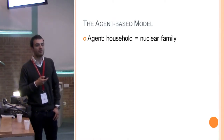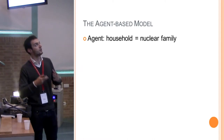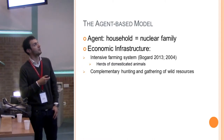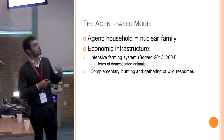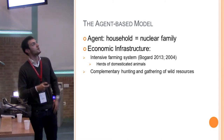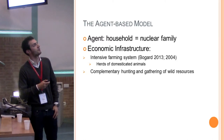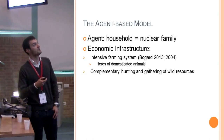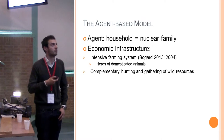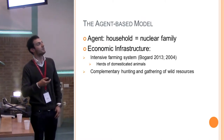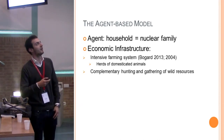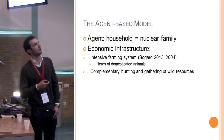One of the peculiarities of agent-based models is that they can work with partial sub-models. One of these concerns the economic infrastructure — essentially, the functioning of an intensive farming system was modeled. That means the agents do agriculture, and they also own domesticated animals: cattle, sheep and goats, and pigs. Those animals are not only used as food, but also because they are exploited for manuring — they are really an active part of the farming system. Agents can also complement their alimentation through hunting and gathering water resources.